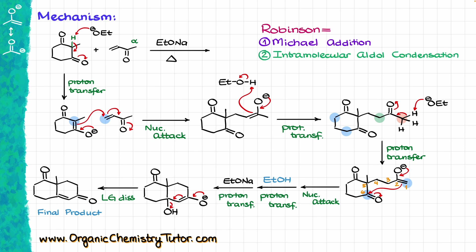In a nutshell, Robinson annulation is just a sequence of the Michael addition followed by the intramolecular aldol condensation. That's it. You just have to remember that we follow the steps in this order, and then you'll always be able to get your product.